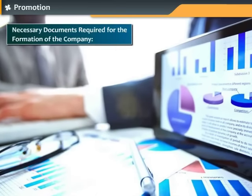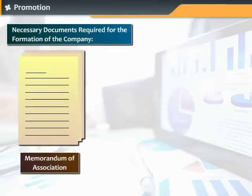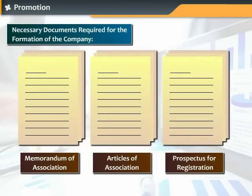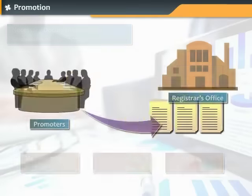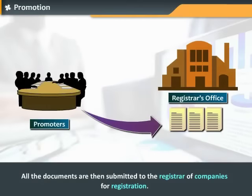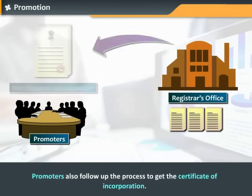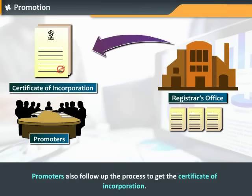Promoters also prepare necessary documents like the memorandum of association, articles of association, and prospectus for registration. All the documents are then submitted to the registrar of companies for registration. Promoters also follow up the process to get the certificate of incorporation.